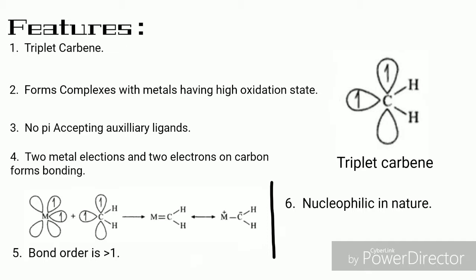This carbene forms with the metals having high oxidation state. In the case of Fischer carbene, the metal atom is in low oxidation state, but here it is in high oxidation state. In this carbene complex there is no pi accepting auxiliary ligands.